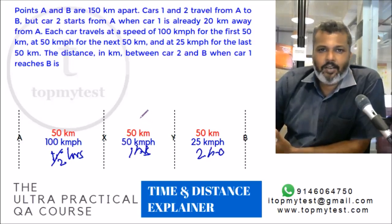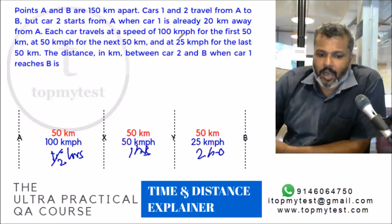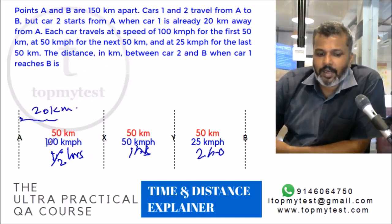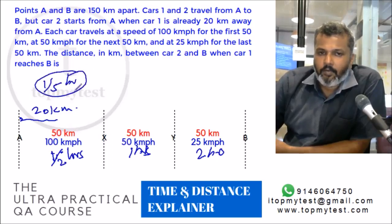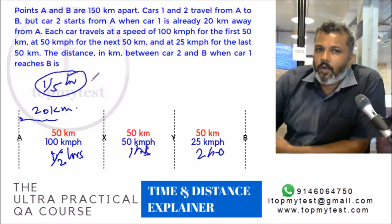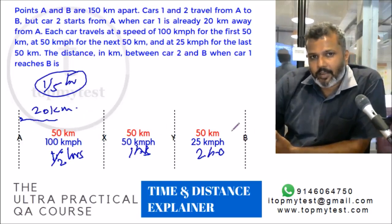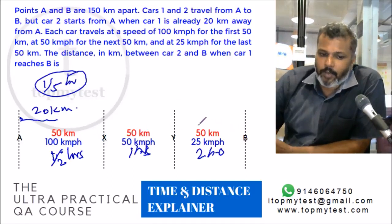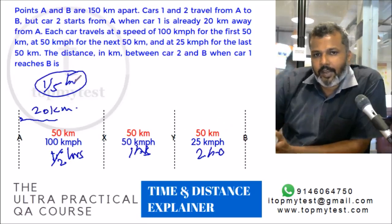Instead of breaking it into parts, let's use proportionality. Car 1 has a lead of 20 km on Car 2. In terms of time, 20 km at 100 km/h takes one-fifth of an hour — 12 minutes. This is Car 1's lead in time. Since the speeds and distances are already fixed, both cars take the same total duration to complete the journey. The only difference is Car 1 started 12 minutes earlier.